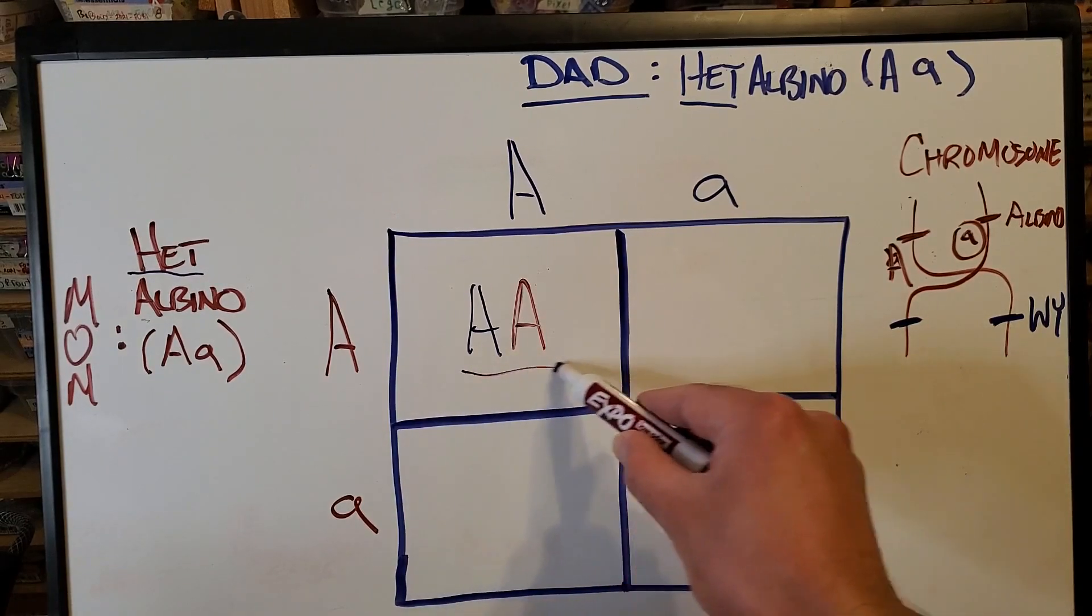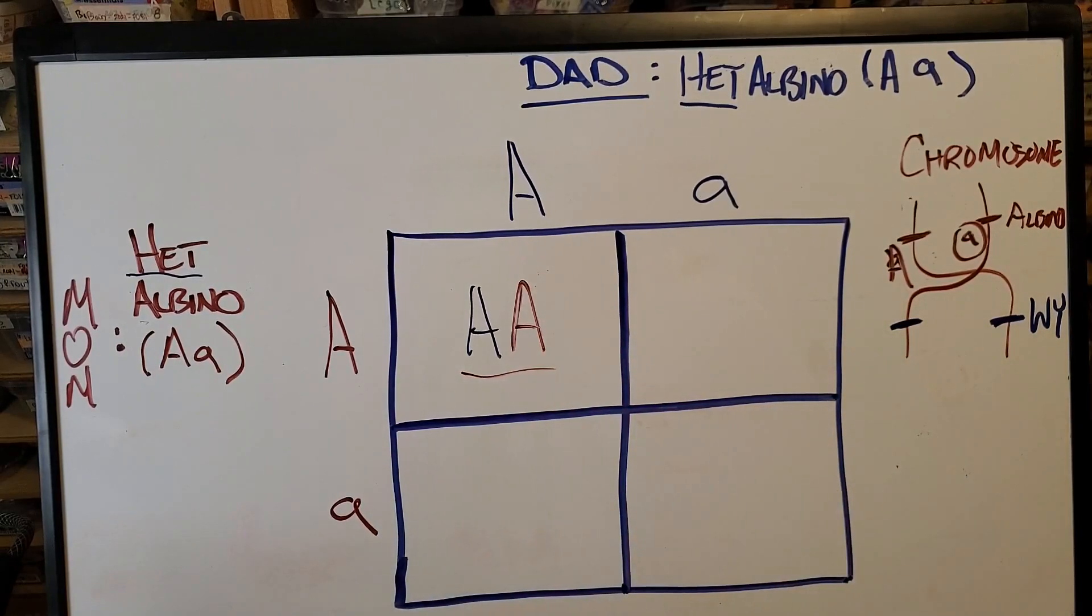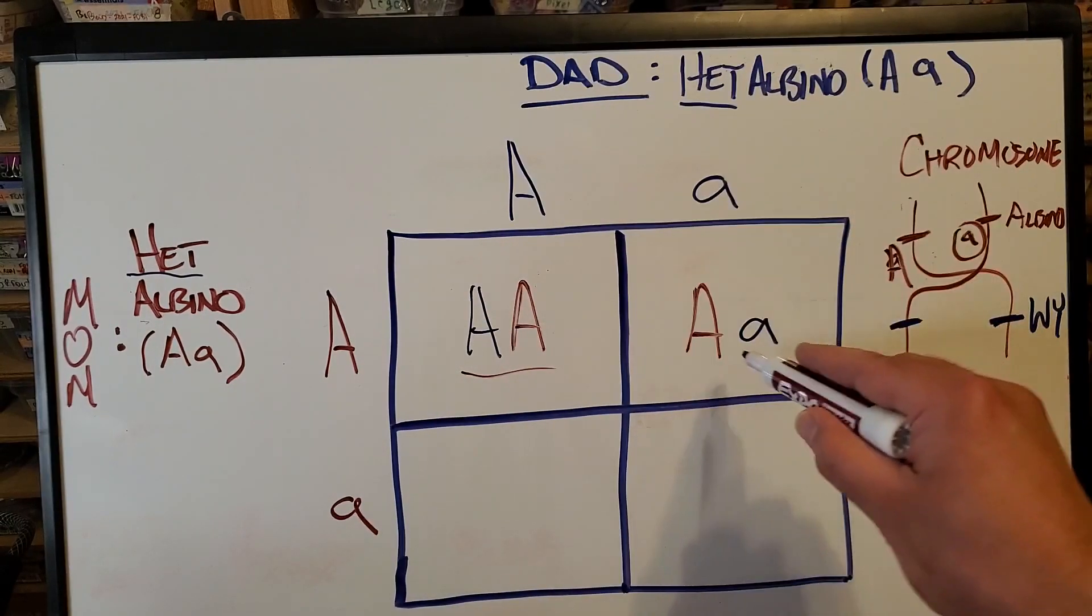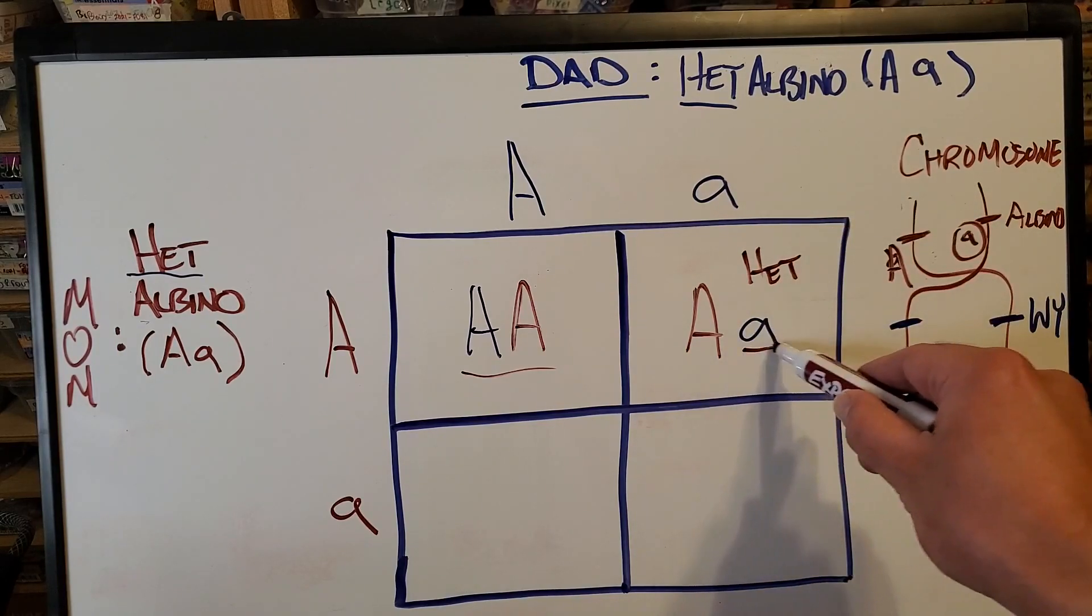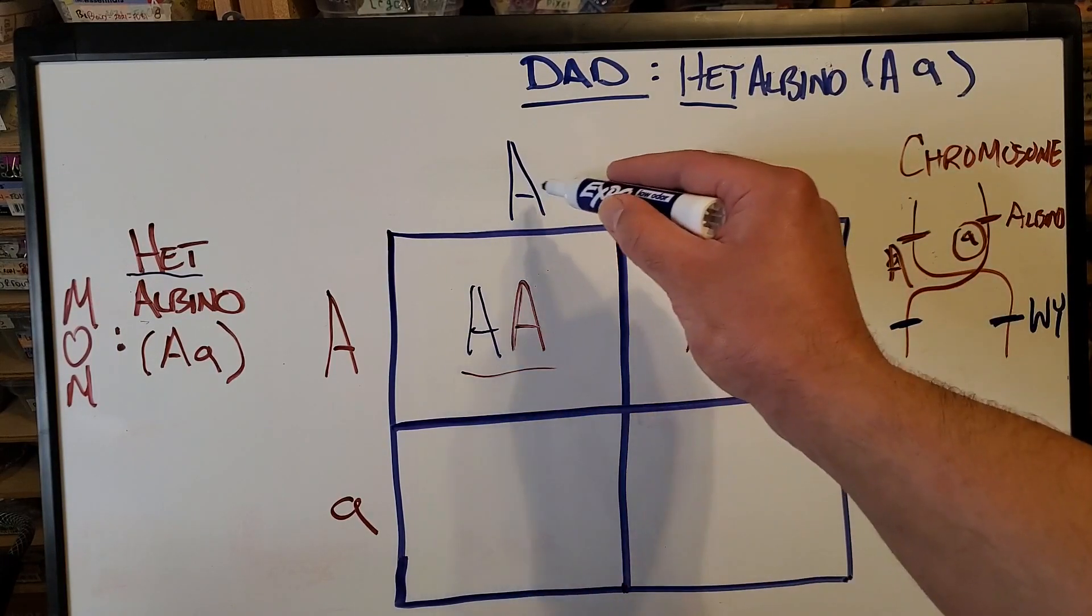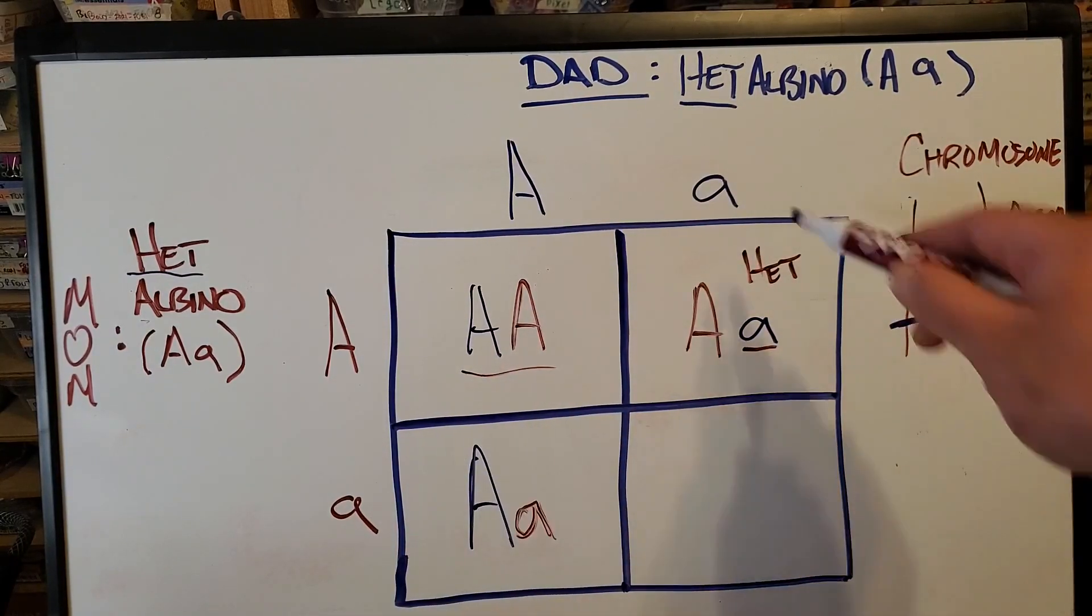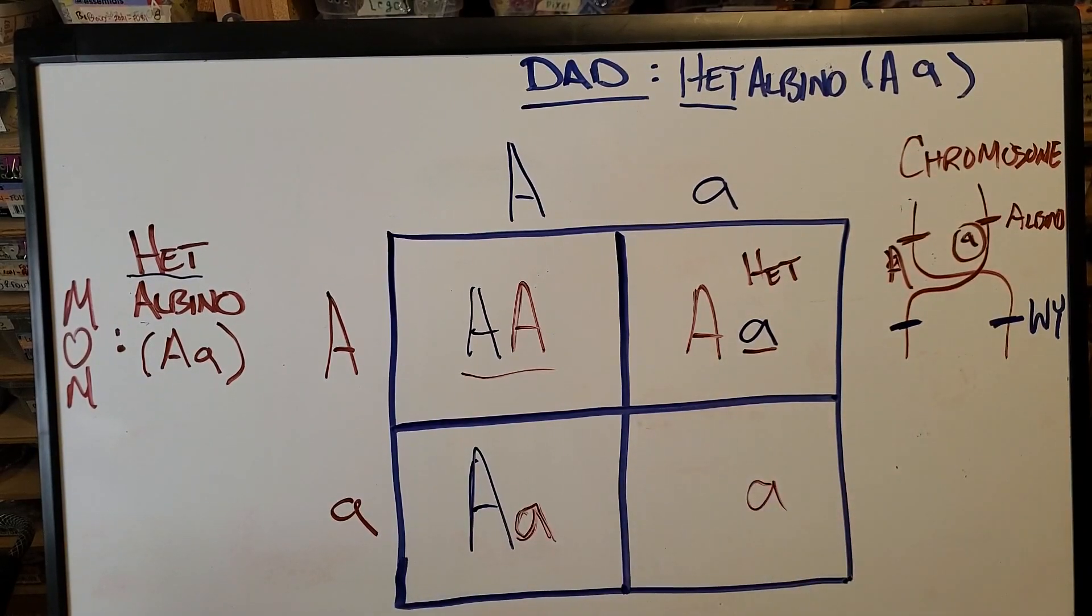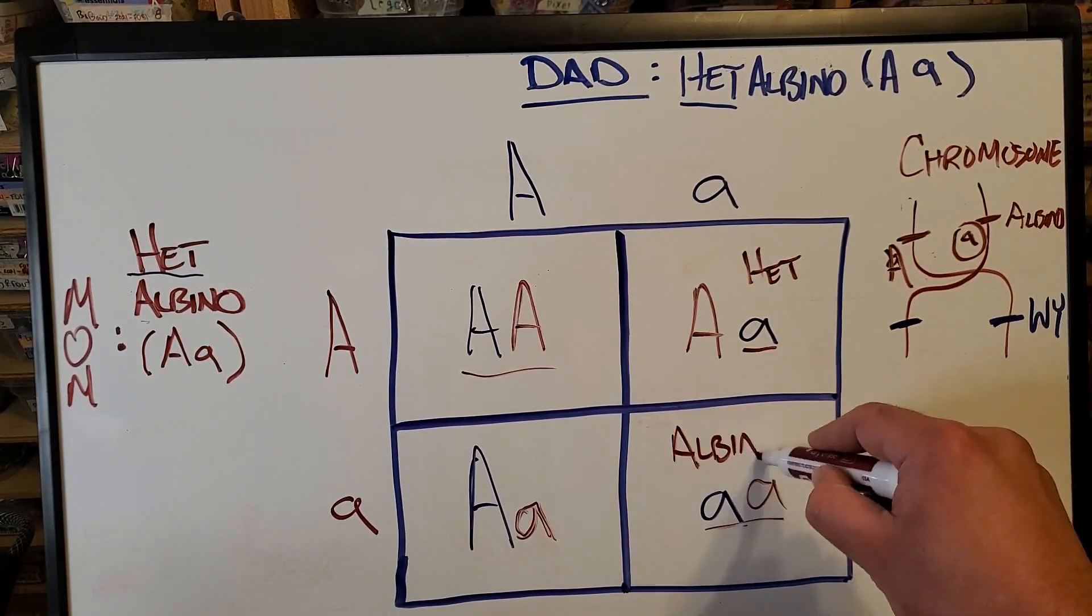And here you're going to have capital A, capital A. So this is a non-albino leopard gecko. It's not even carrying an albino gene from dad or mom. This little a drops down and this big A carries over. And this gecko is actually a het for albino. See? It's carrying one copy of the albino gene. The same thing happens here. This big A drops down. This little a carries over. And something different happens over here. This a carries down. This a carries over. And here you actually have what would be a visual albino.